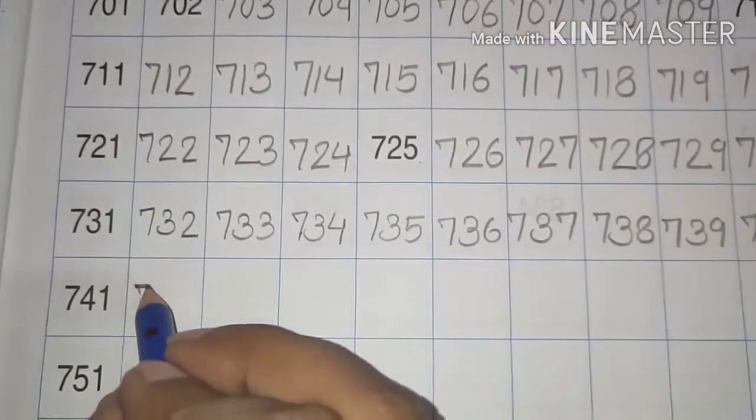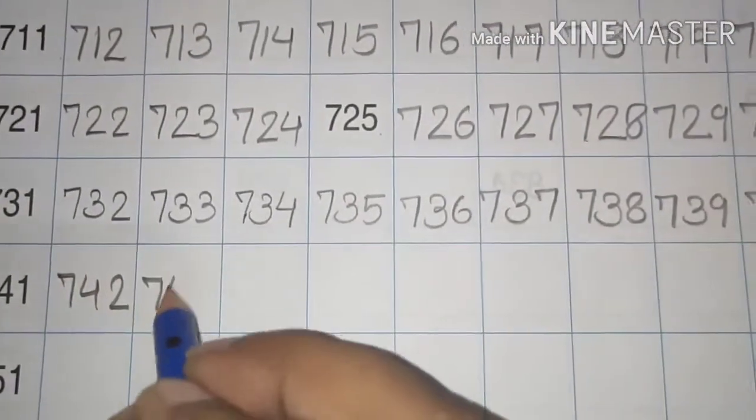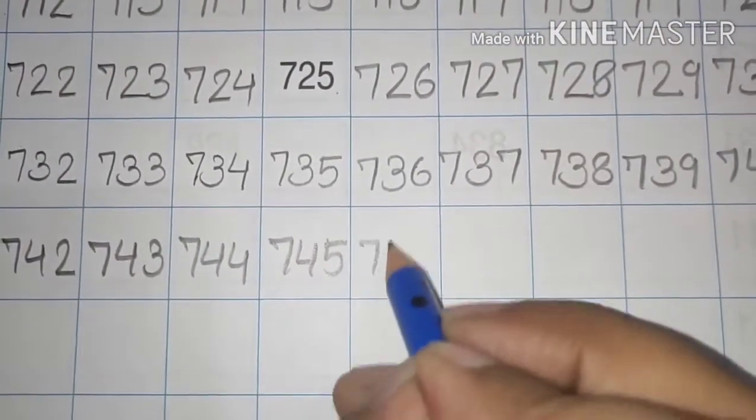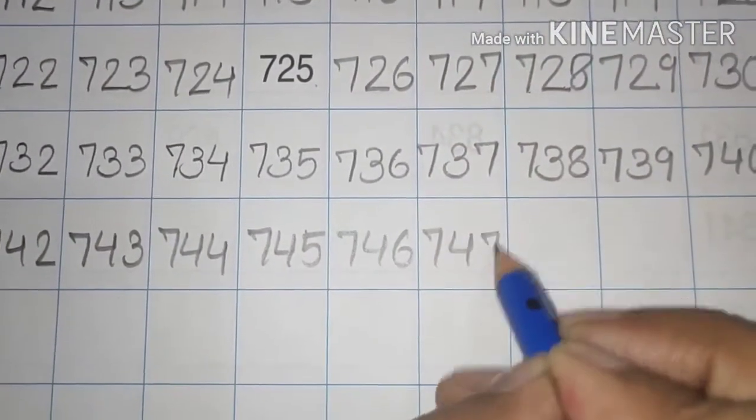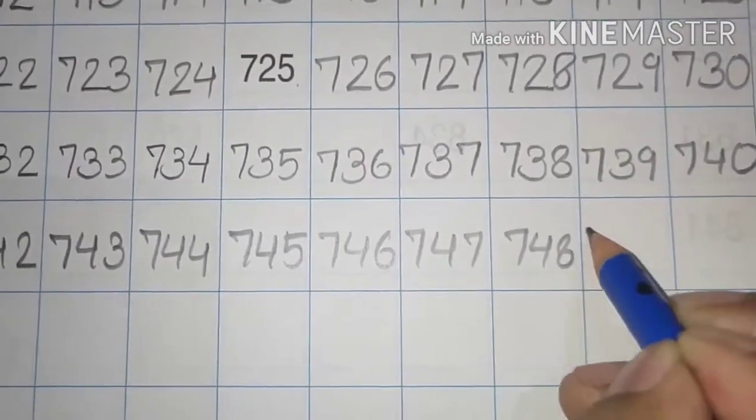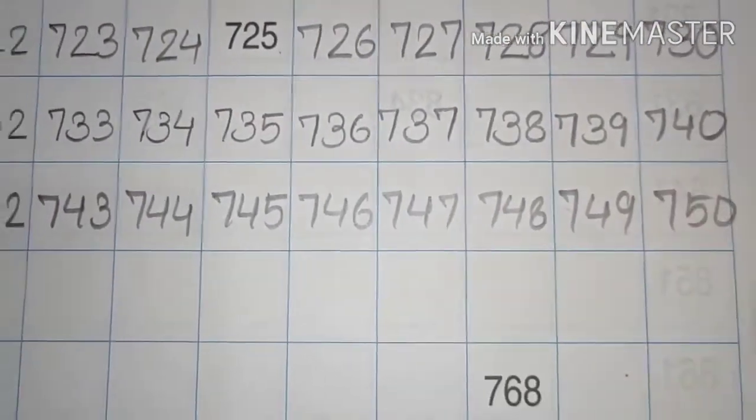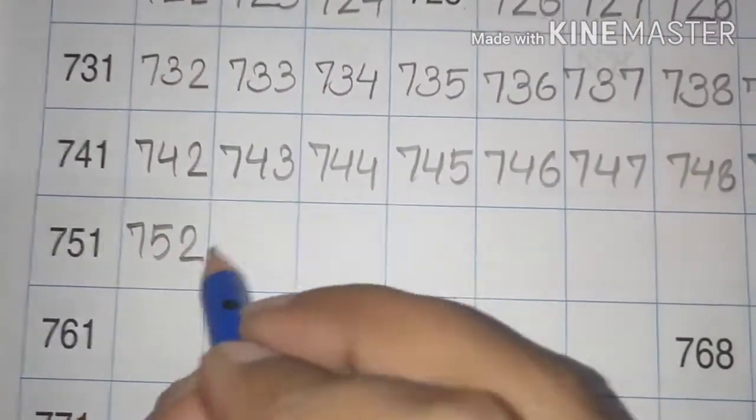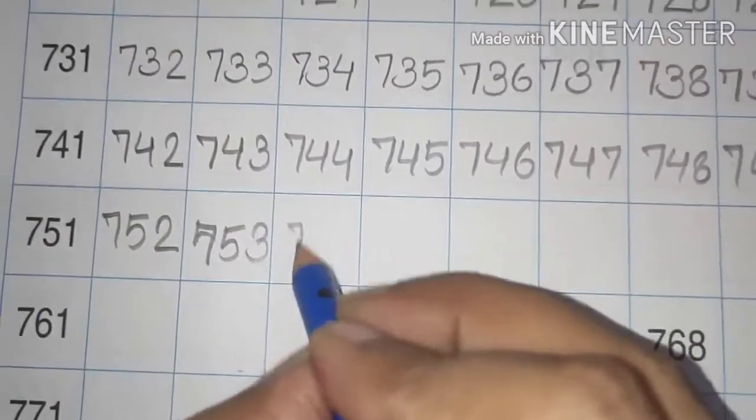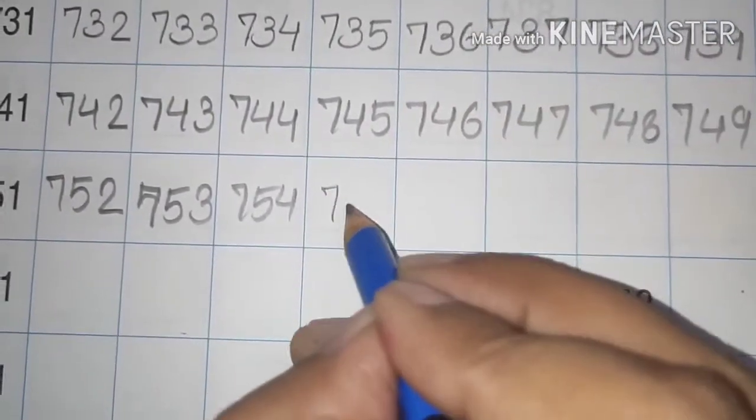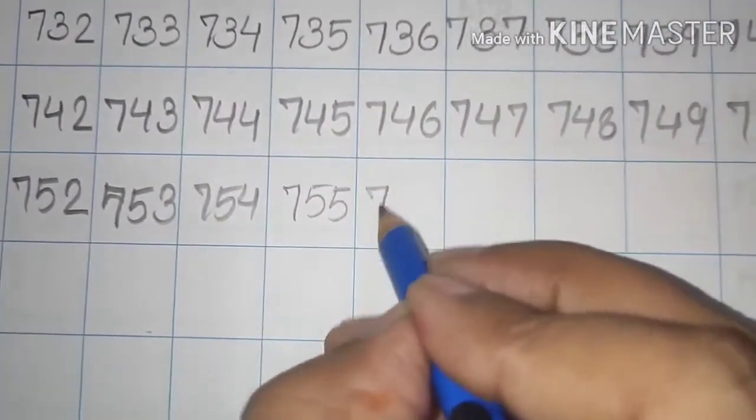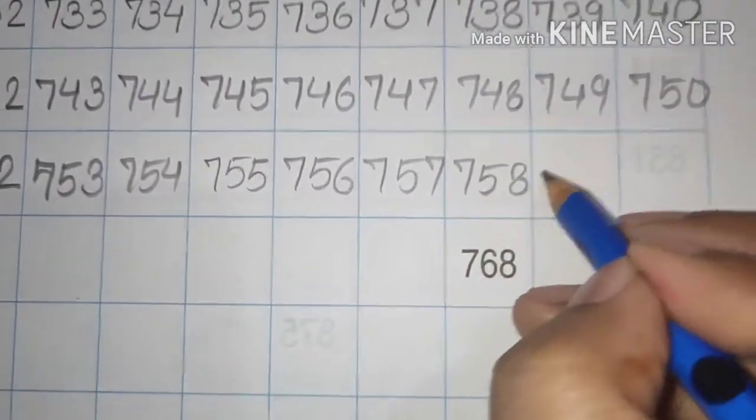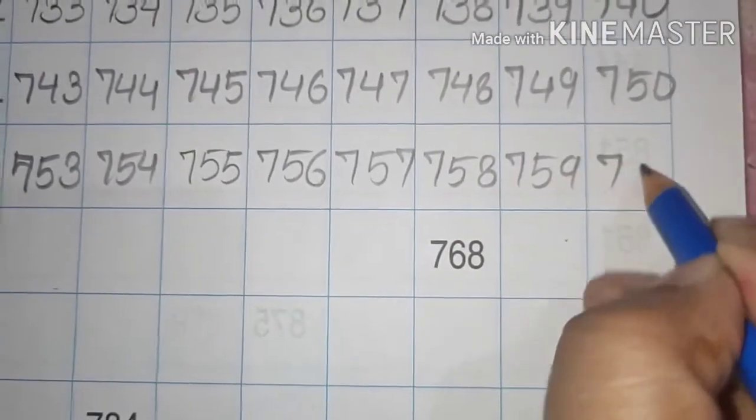And then 741, 742, 743, 744, 745, 746, 747, 748, 749, 750. Okay, and then 751, 752, 753, 754, 755, 756, 757, 758, 759, 760.